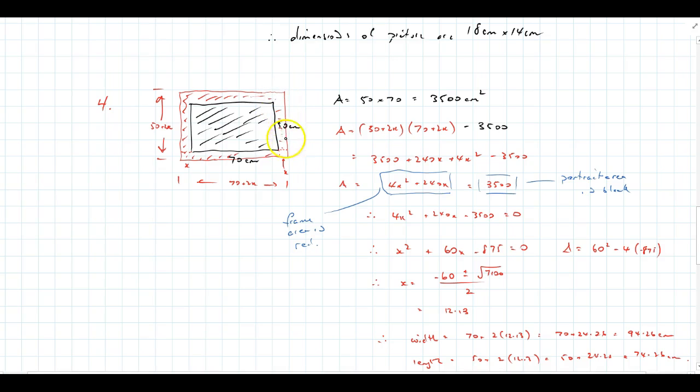Now, the area of the frame, I figured, was, if this is 70, and these little n bits are x each, then that's 70 plus 2x along here, and if that's 50, and that's x, and that's x, that's 50 plus 2x.